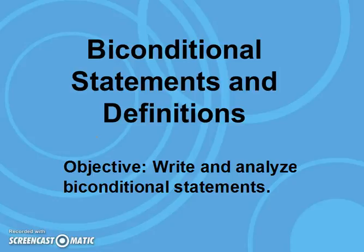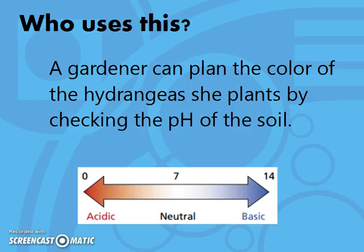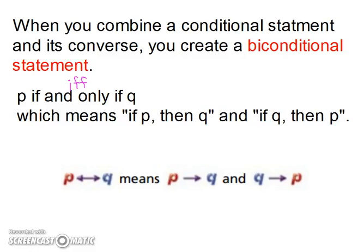Bi-conditional statements and definitions. Our objective is to write and analyze bi-conditional statements. A gardener can plan the color of the hydrangeas she plants by checking the pH of the soil. When you combine a conditional statement and its converse, you create what's called a bi-conditional statement — that is, p if and only if q — which means if p then q, and if q then p, at the same time. Symbolically, you use two arrows to represent the bi-conditional statement. You can abbreviate 'if and only if' as IFF.